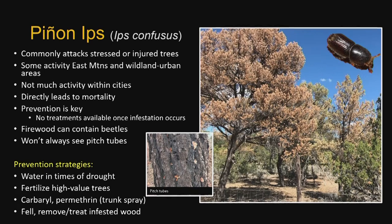Prevention strategies: water trees properly in times of drought. If you have 10 or 20 trees it's not always feasible, but target those high-value trees that offer shade, protection, or screening. Fertilize high-value trees with low and slow fertilizer — you don't want too high nitrogen, especially for a pinion tree. Carbaryl and permethrin sprayed on the trunk about this time of year will set up protection during the summer from attack. If you have a high population of beetles in the area, consider treating this way. Fell and remove infested trees — take them to a green waste facility so the infestation isn't spreading to your or your neighbor's properties.